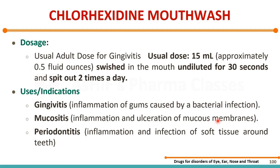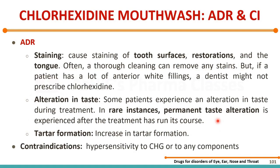Uses of chlorhexidine include gingivitis, necrotizing ulcerative gingivitis, and periodontitis. Gingivitis involves gum inflammation due to bacterial infection. Necrotizing ulcerative gingivitis involves ulceration of the mucous membrane. In periodontitis, there is inflammation of the gum and soft tissue around the teeth. In all these cases, chlorhexidine is used.